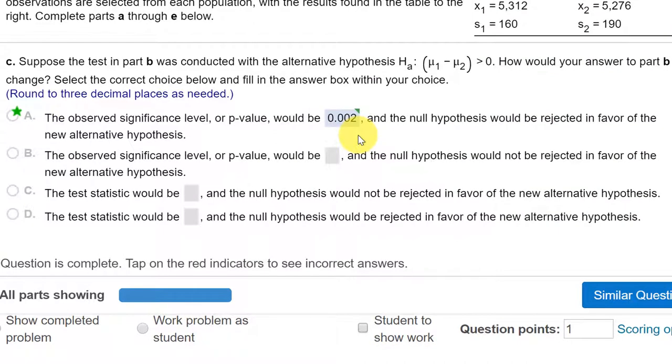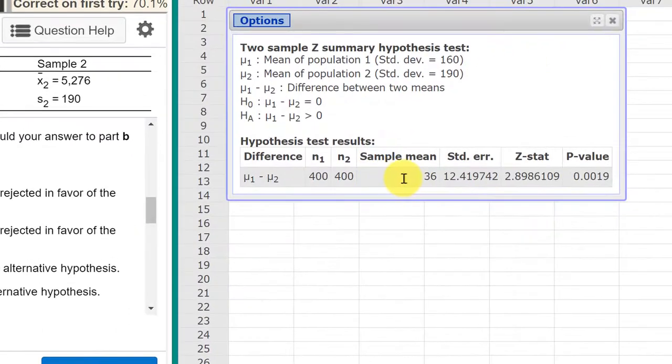and it is .002 rounded to three places. And again, we would say reject the null because the p-value is less than alpha .05. And we would accept the alternative that mu1 minus mu2, that difference, is greater than zero, which it is. Sample mean here, the difference 36 is greater than zero.